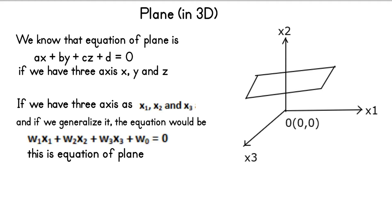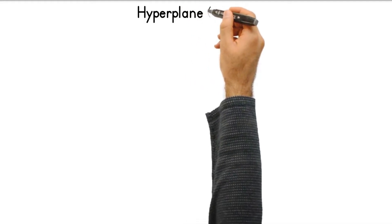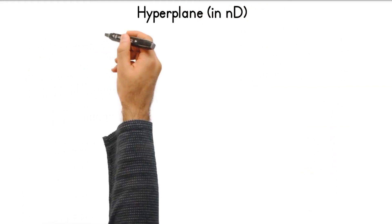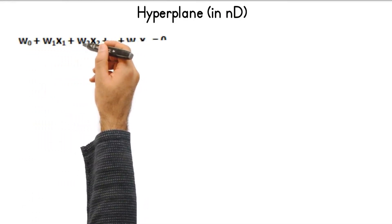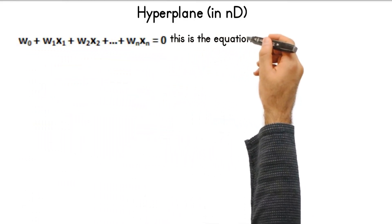A line is called a linear surface because it separates the whole region into two regions — one region on one side of the line and the other region on the other side. Similarly, a plane can separate the whole 3D region into two regions: one above the plane and another below the plane. For ND we call it a hyperplane. The equation of a hyperplane is: w0 + w1*x1 + w2*x2 + ... + wn*xn = 0. This is the equation of an N-dimensional hyperplane.